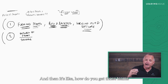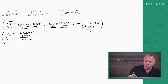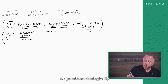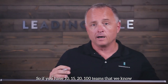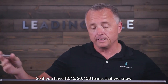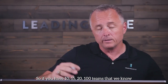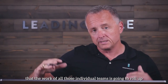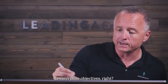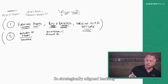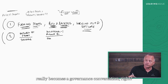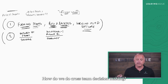Then it's about how you get those teams to operate on strategically aligned backlogs. So if you have 10, 15, 20, or 100 teams, you need to ensure that the work of all those individual teams rolls up to enterprise objectives. Strategically aligned backlogs really become a governance conversation — how do we do cross-team decision making?